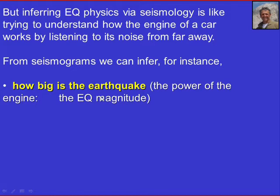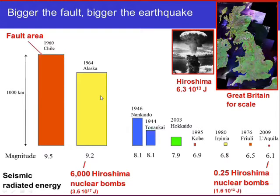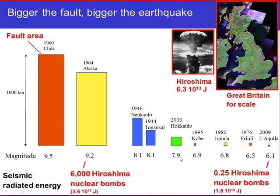From seismograms we can infer how big an earthquake is — the earthquake magnitude — which relates to the fault area. The biggest earthquake ever measured instrumentally by humans was the 1960 Chile earthquake, magnitude 9.5, with a fault area as big as France — about 300,000 square kilometers. The 1964 Alaska earthquake was 9.2. Going to smaller earthquakes, the 2003 Hokkaido earthquake was magnitude 7.9, and the 2009 L'Aquila earthquake is also shown. Clearly, the bigger the fault, the bigger the magnitude.